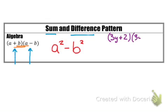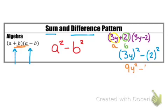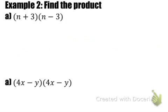Let's look at an example: 3y plus 2, times 3y minus 2. Our a term is 3y and our b term is 2. The first terms are the same and the second terms are opposite in sign, so this is the sum and difference pattern. It takes the form a squared minus b squared. So (3y) squared minus (2) squared gives us 9y squared minus 4.